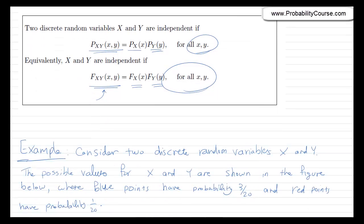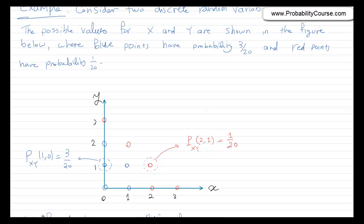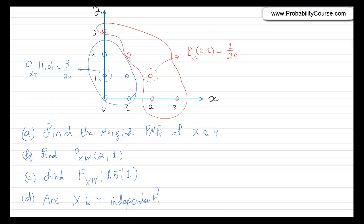Let's look at a problem to practice these concepts. This is a mechanical problem to practice, and in later videos we'll look at more practical examples. We have two discrete random variables X and Y. The possible values are given in a figure with ten points representing possible values of X and Y. There are red circles and blue circles.